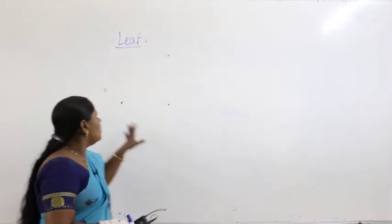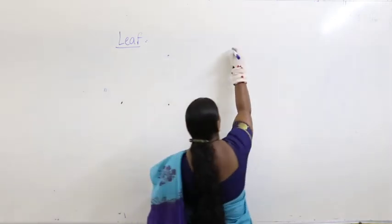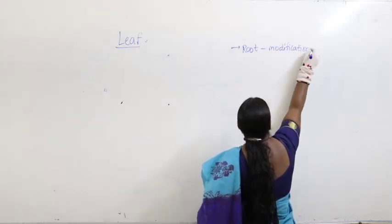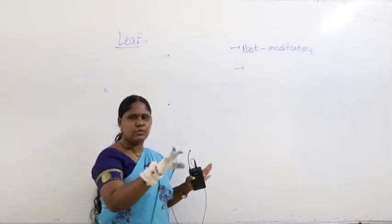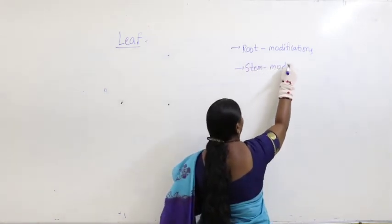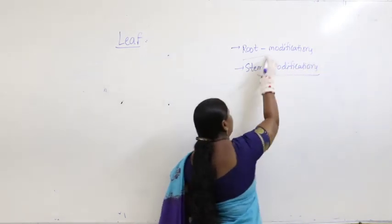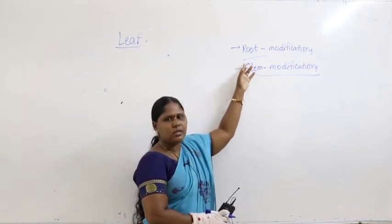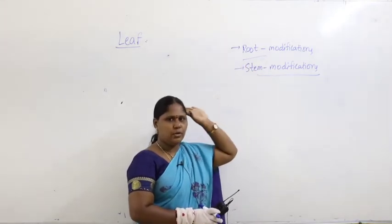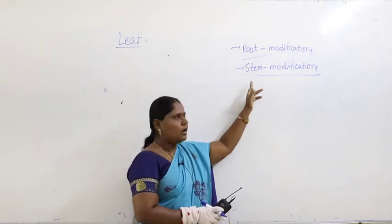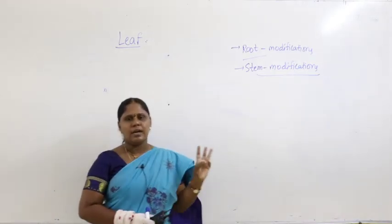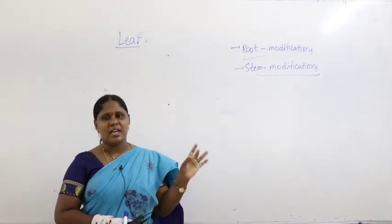Earlier we discussed modifications — we studied root modifications and got a clear picture of all types of root modifications along with examples. Similarly, we studied stem modifications: what is a stem, functions of the stem, and all three types of stem modifications — underground, subareal, and aerial stem modifications.